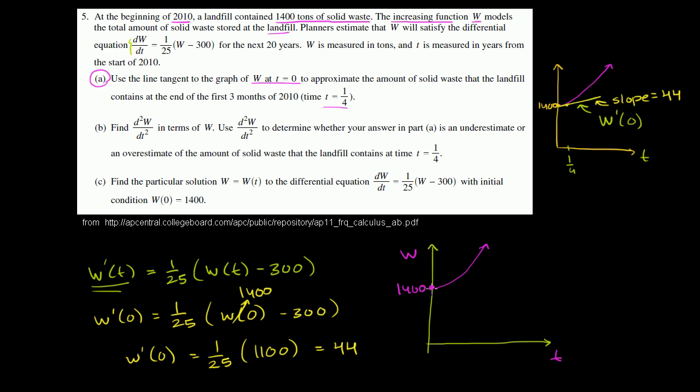So maybe it looks something like that. And then our slope right over here, I haven't drawn w exactly accurately, I'm just guessing what it might look like at this point. The tangent line has a slope of 44. So that is our tangent line.